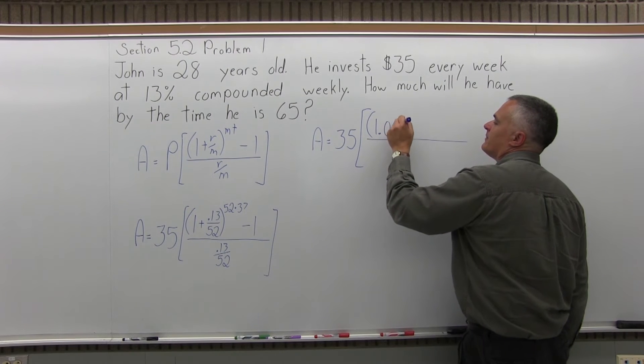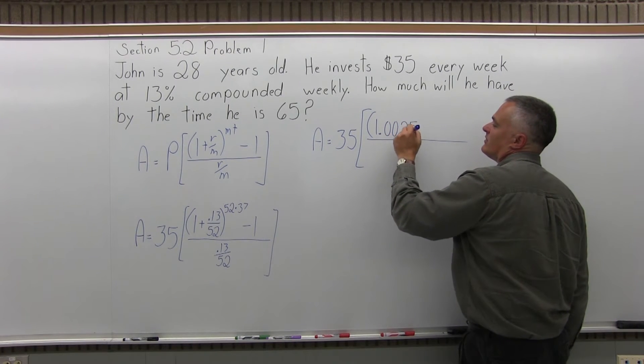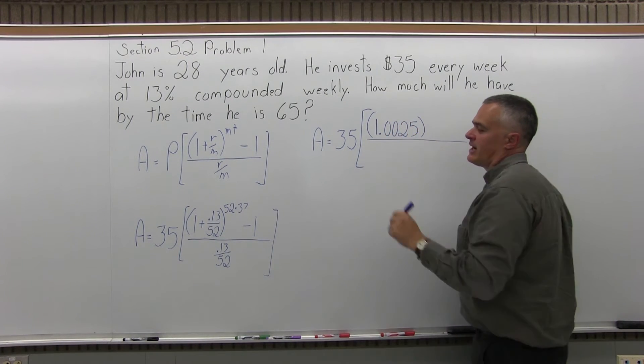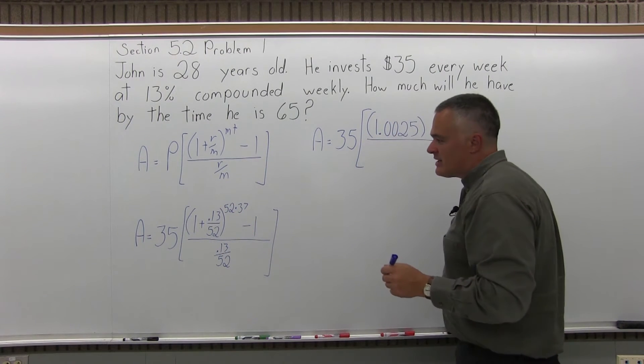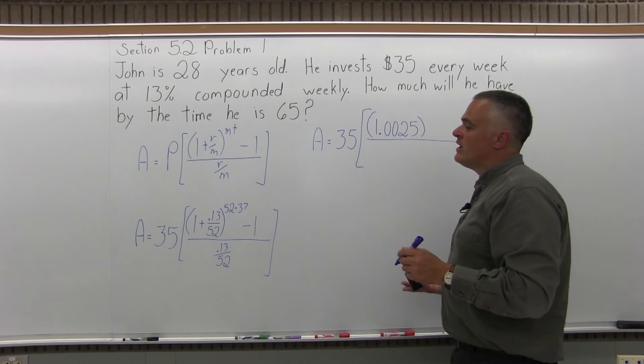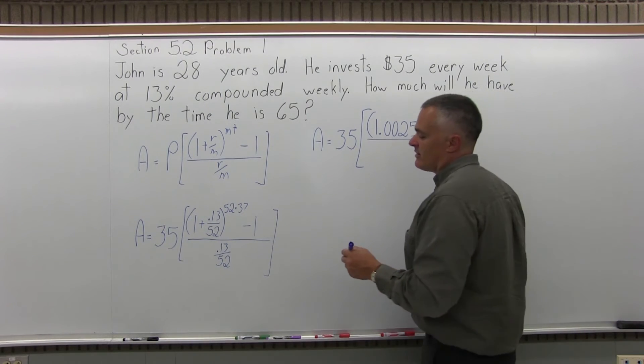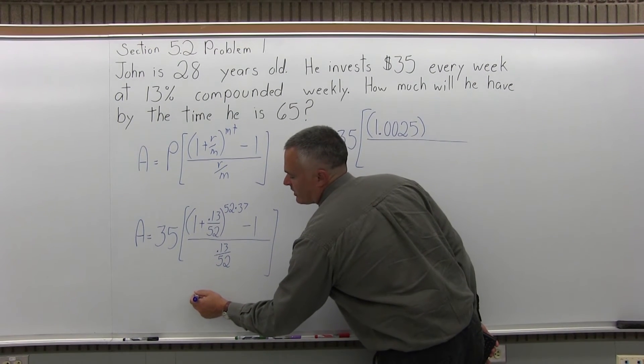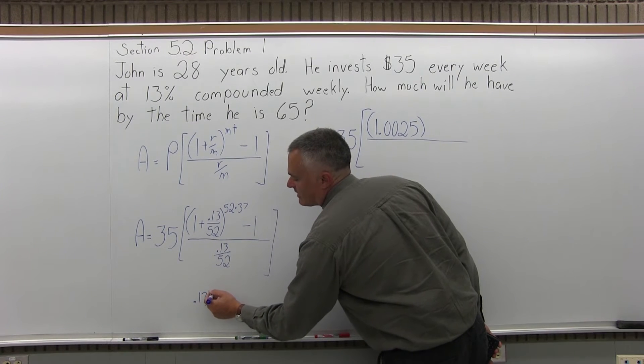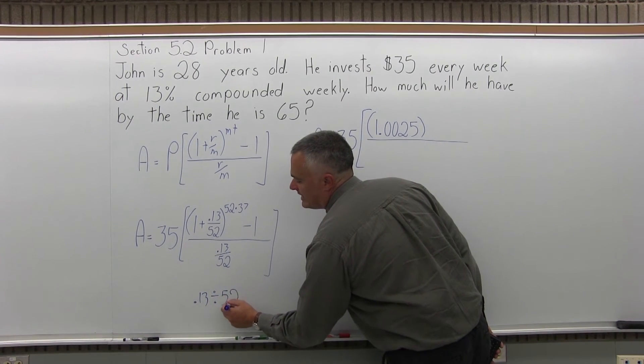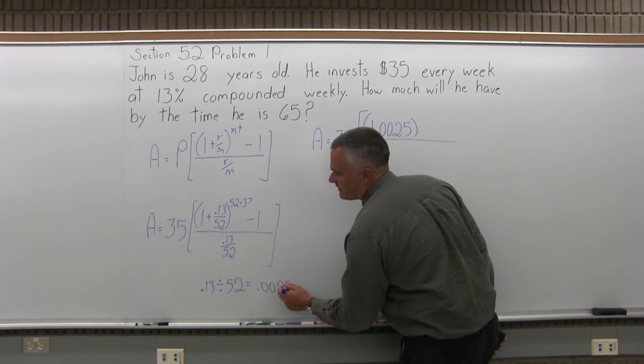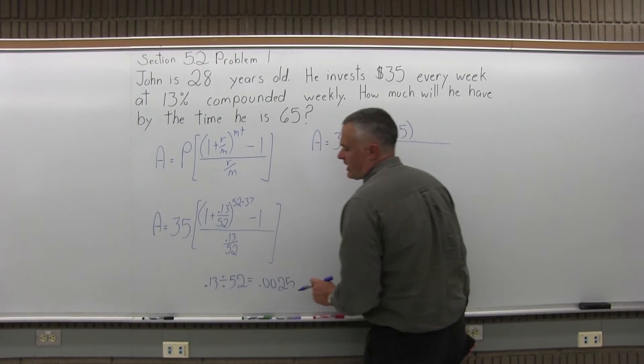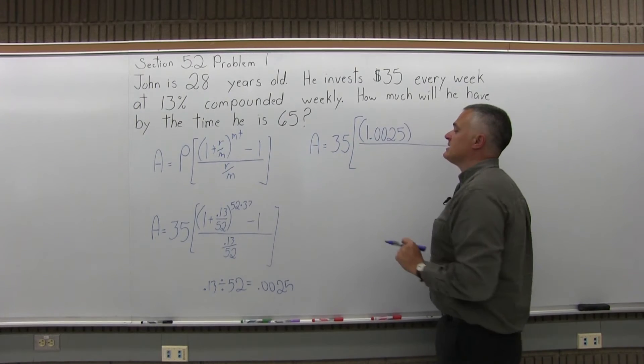Now again, I know that 13 over 52 is 1 fourth from playing cards, that's 13 of each suit. If you're not comfortable with that or you think it's .0025 and you're not sure, just do it on your calculator. With your calculator you would do .13 divided by 52 equals, and the calculator will tell you it's .0025, and then when you do plus 1, it will be 1.0025.